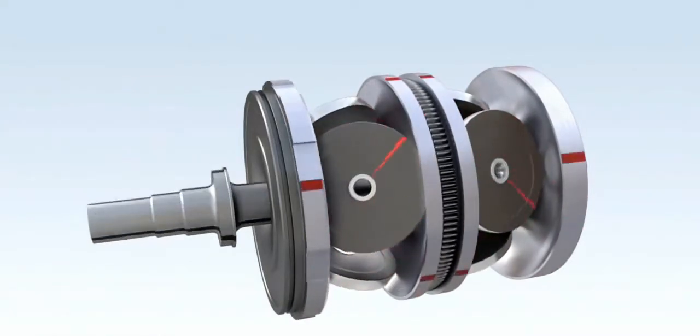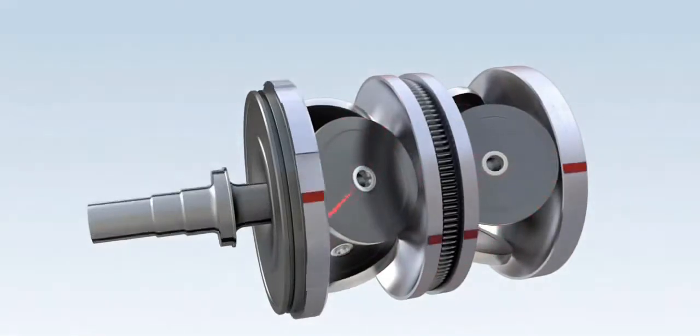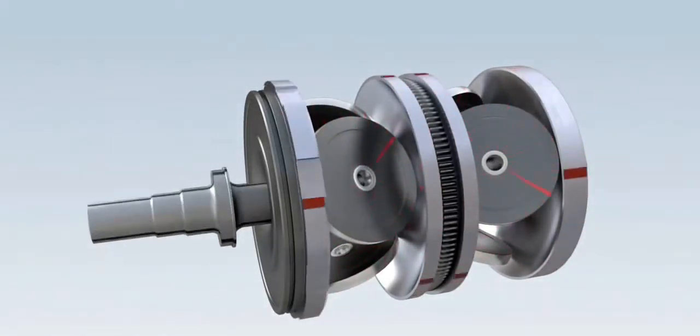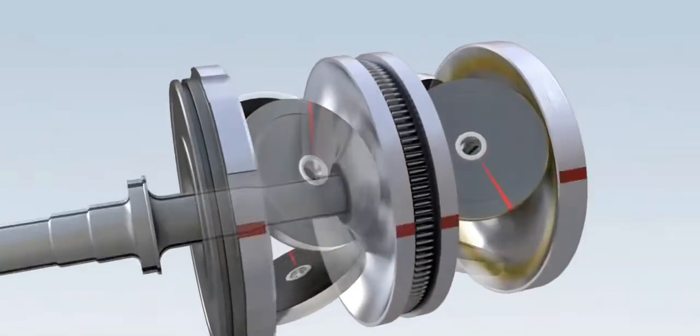As the variator components rotate, power is transmitted from the input discs to the output disc via the rollers. The angle of the rollers changes with the variator ratio and relates to the speed difference between the input and output discs.